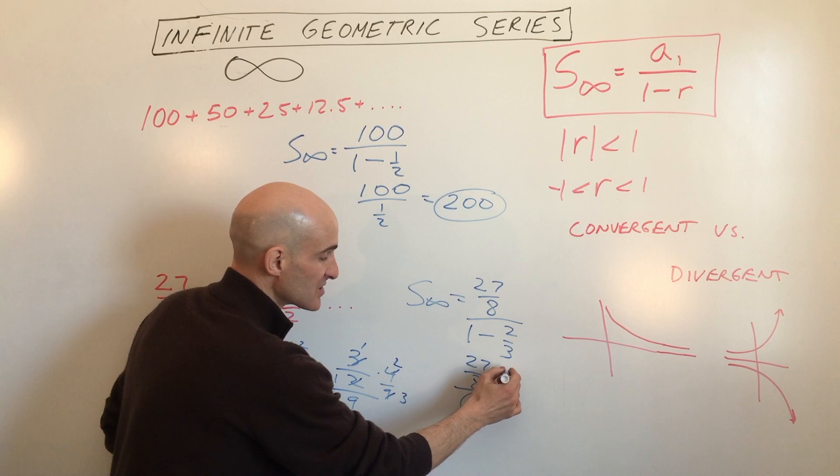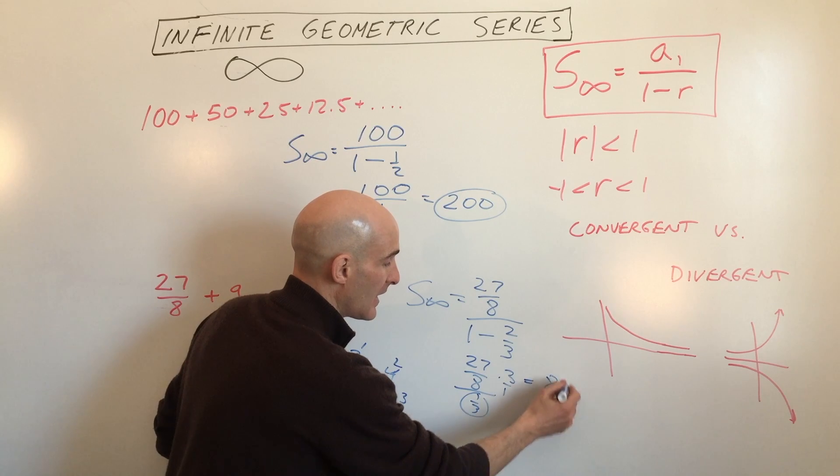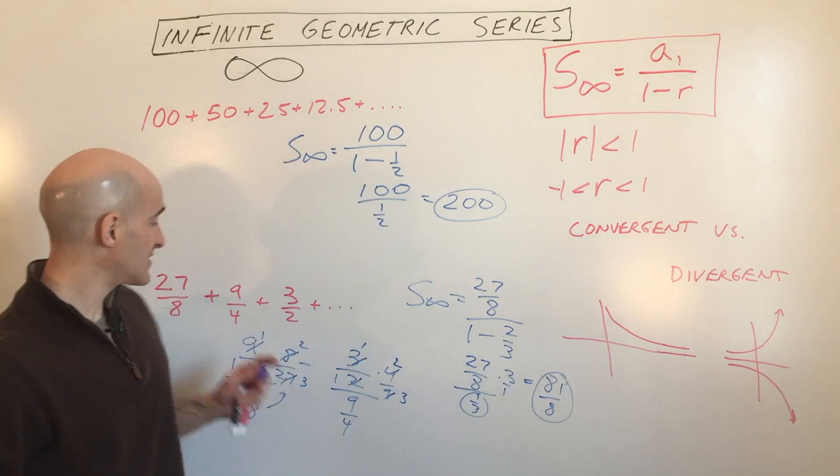When we divide by a fraction, it's like multiplying by the reciprocal. We get 81 eighths. That's an exact answer. That's the sum.